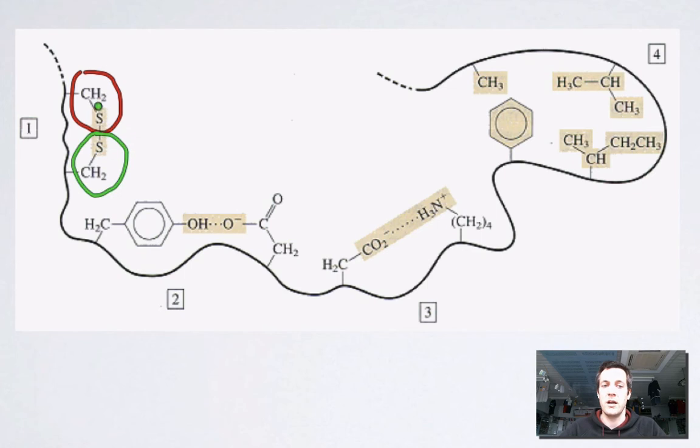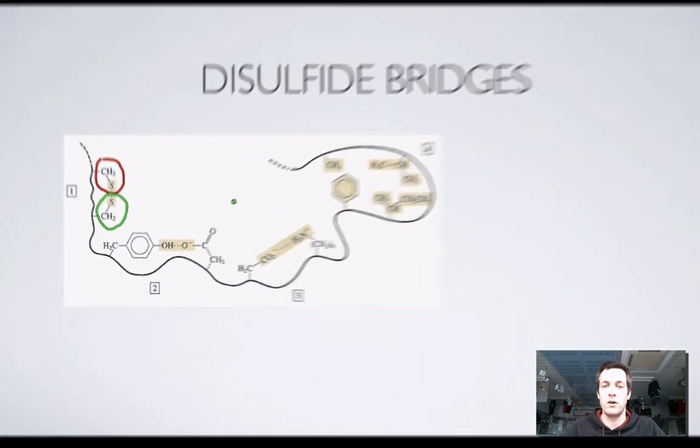You can see how this interaction, this kind of attachment between these two side chains, is going to force this long chain to fold up in a particular way. So again, it's giving rise to the tertiary structure of our protein.